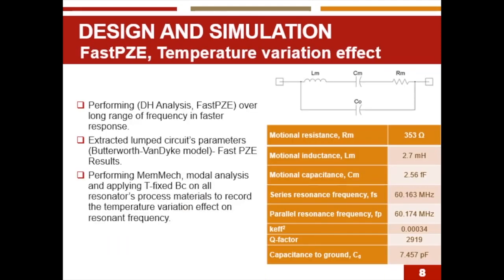Fast PZE and temperature variation effect. Performing direct harmonic analysis and fast PZE over long range of frequency helped us to extract the lumped circuit parameters. As we can see from this table, the motional resistance, inductance, and capacitance are also the series and parallel frequencies. Also by performing the modal analysis and applying T fixed boundary conditions on all resonator process materials to record the temperature variation effect on the resonant frequency, as we will show later on.